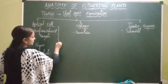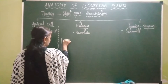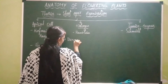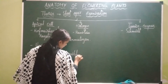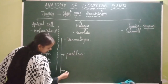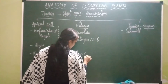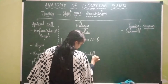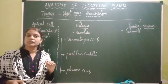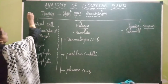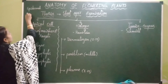According to histogen theory, the shoot apex consists of three types of meristematic layers called histogen layers. The outermost layer is the dermatogen, the middle layer is the periblem, and the innermost layer is the plerome. In angiosperms, three tissue systems are present: epidermal tissue system, ground tissue system, and vascular tissue system. The dermatogen forms the epidermal tissue system, i.e., the epidermis.